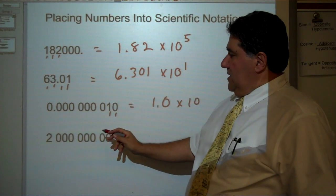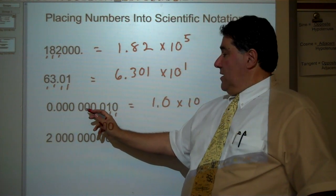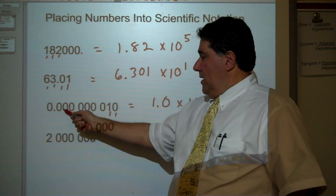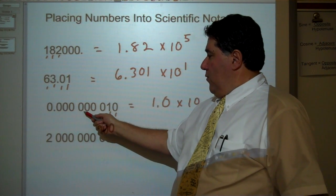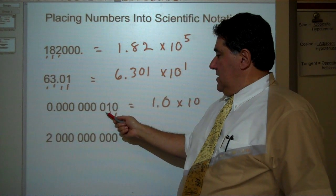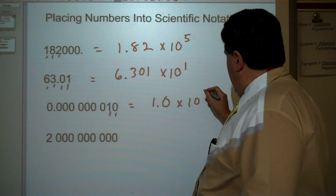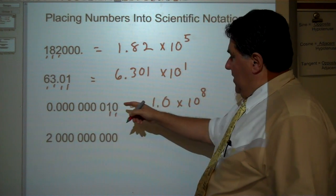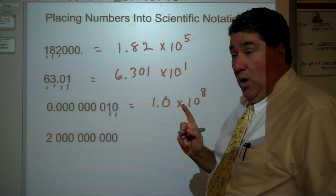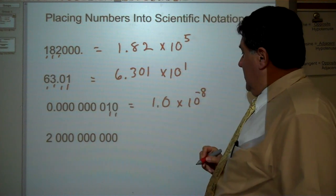Now how many decimal places does it take to get this into scientific notation? It's 1, 2, 3, 4, 5, 6, 7, 8. It's 8 decimal places. And because the number is less than 1, it's in negative direction.